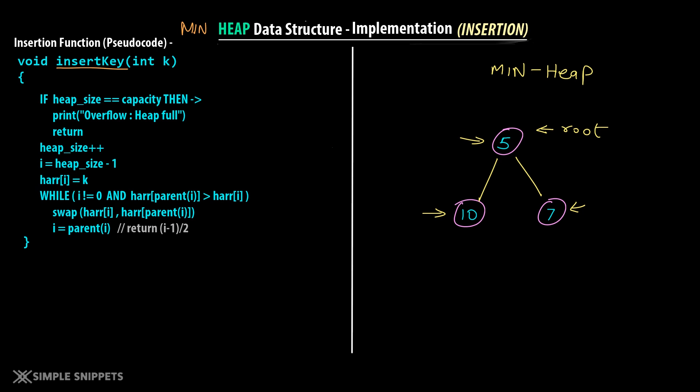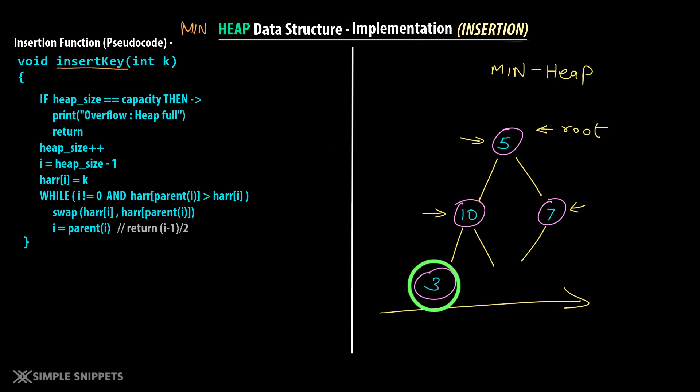Let's say we want to insert the value 3. The way we insert is: we insert it properly as a complete binary tree from top to bottom, left to right — the leftmost child is added first, then proceeding in that order. So right now we added a new node, but this is not following the min heap property because for this node its parent is 10, which is greater than its own value 3. The lesser value has to be on top — in a min heap the smallest value is always at the root position. So once we insert this, we will perform swapping.